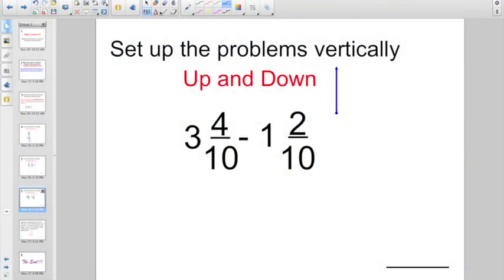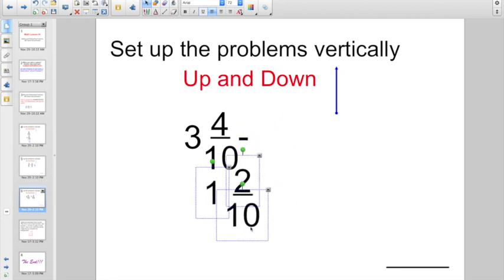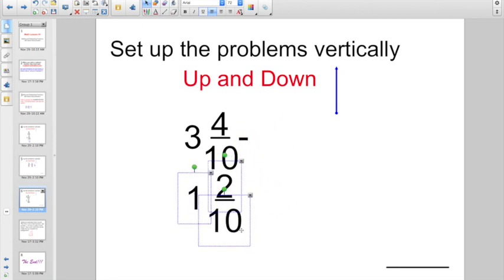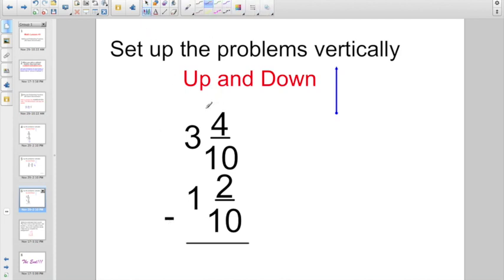Check out this one, though. Here you probably do, because I've seen too many people just make silly, silly mistakes. So, let's go ahead and set them up vertically. Three and four-tenths minus one and two-tenths.